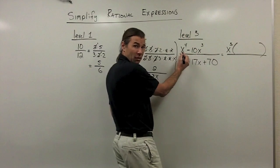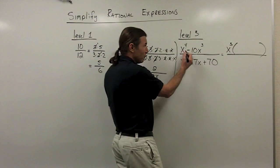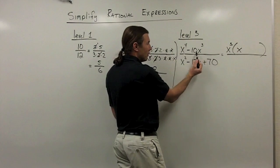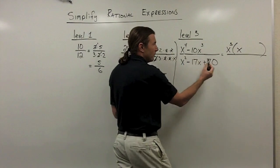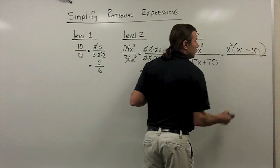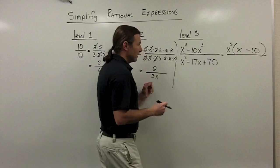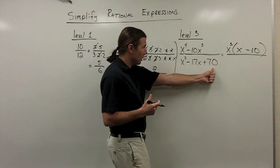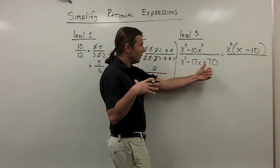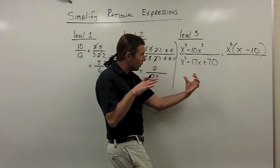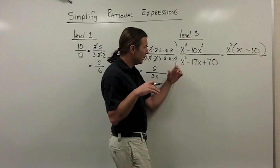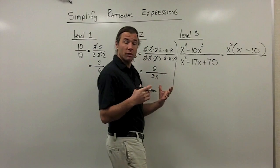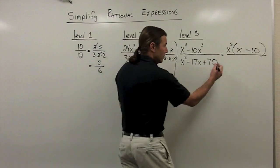When I factor x to the 3rd out of x to the 4th, I have 1x left. When I factor x to the 3rd out of the last term, I'll have negative 10. Now going down to the denominator, I have three terms, so I want to look at the whole expression at one time. I have a trinomial there, so I'm going to try to factor it into two binomials.